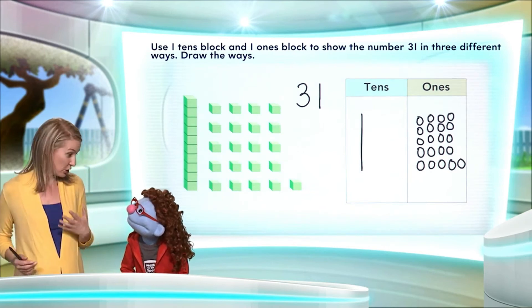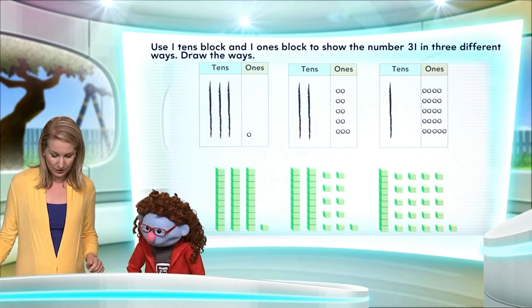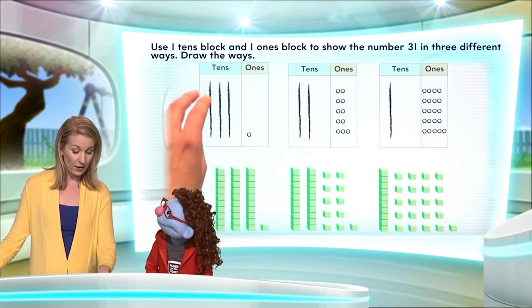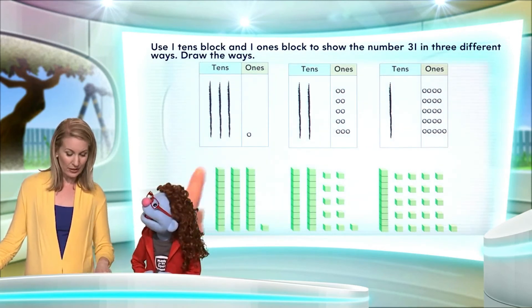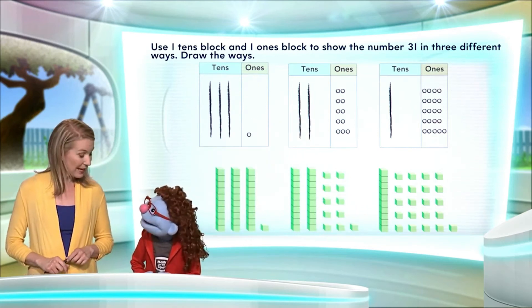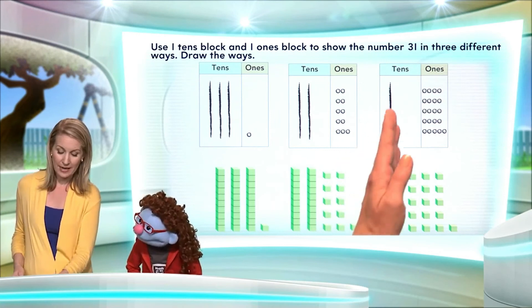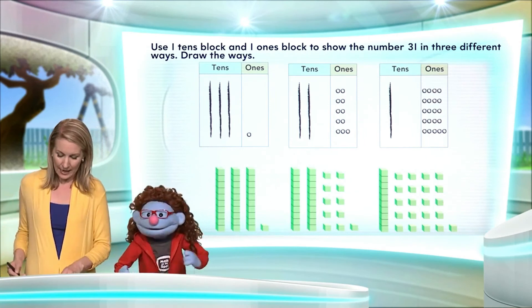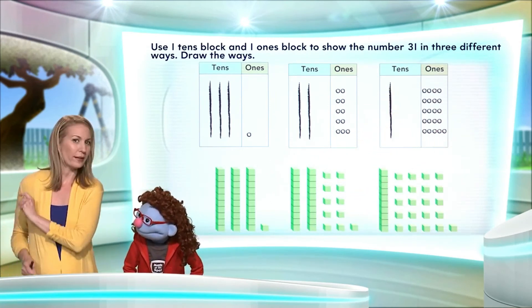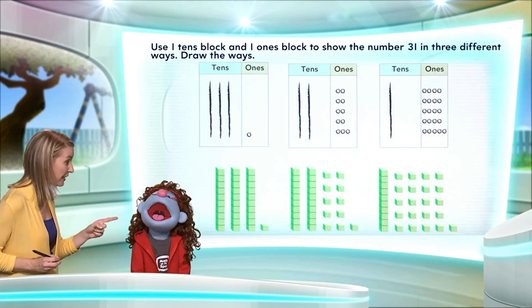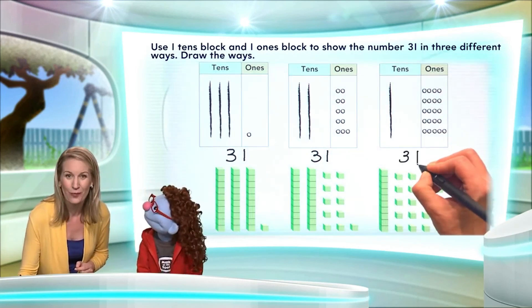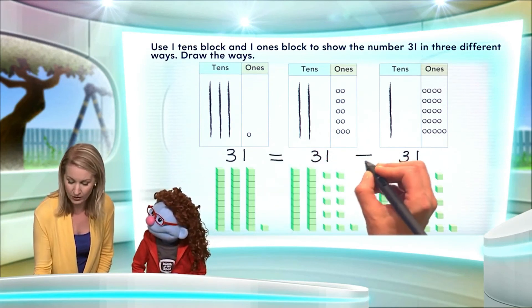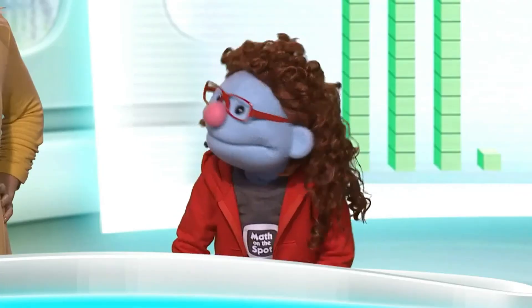Let's compare the three ways that we showed just now. In the first case, we started with three 10s which made 30, and then one 1 — so we had 31. Then we took away one of the 10s and replaced it with 10 ones, and that gave us two 10s and 11 ones. And then in the third case, we removed another 10 and replaced that with 10 more ones, so we had one 10 and 21 ones. All of these representations — all of what we showed here — means 31. That was math-erific!